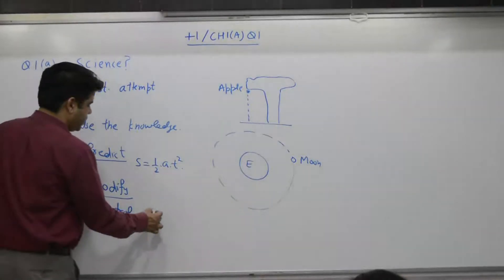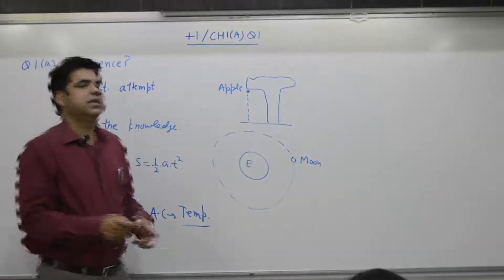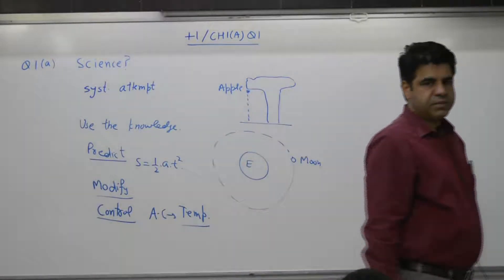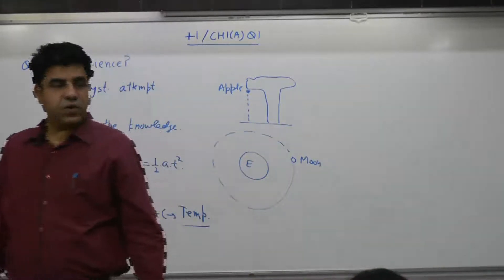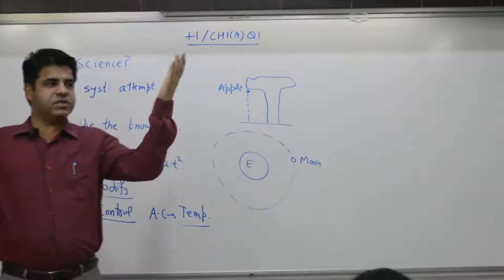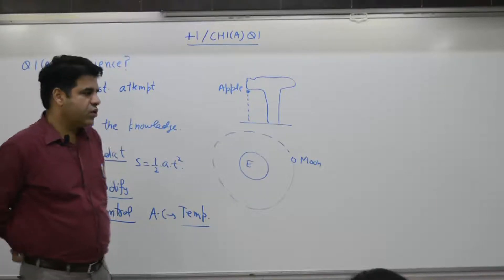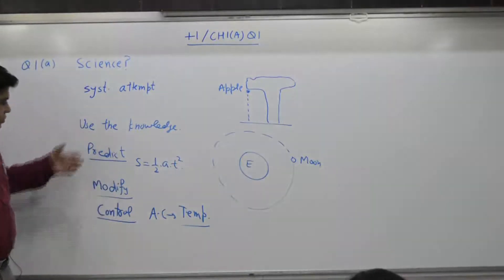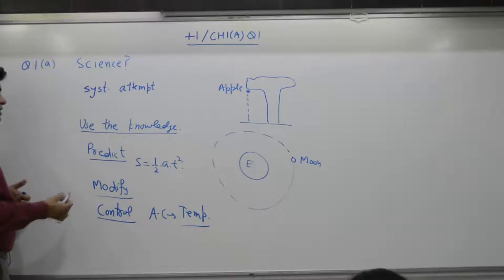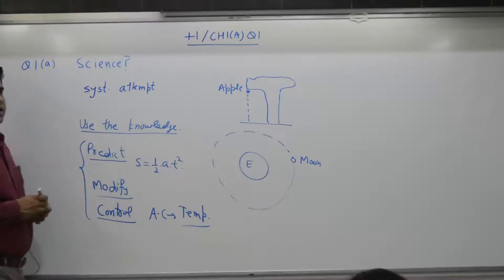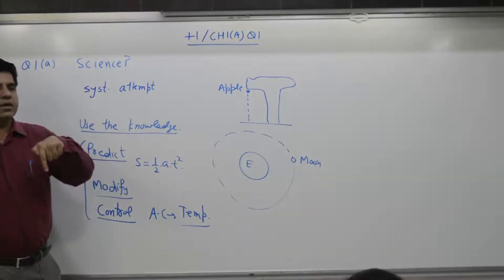And then there is control. In a given room, an air conditioner controls the temperature. 200 years back this device was not there, so there was no control of room temperature. But now in summer, the outside temperature is 42 degrees, yet you can achieve a temperature of 20 inside the room. By using your knowledge, once you develop understanding of science, you can predict, modify or control — and it is this ability that people will pay you for.